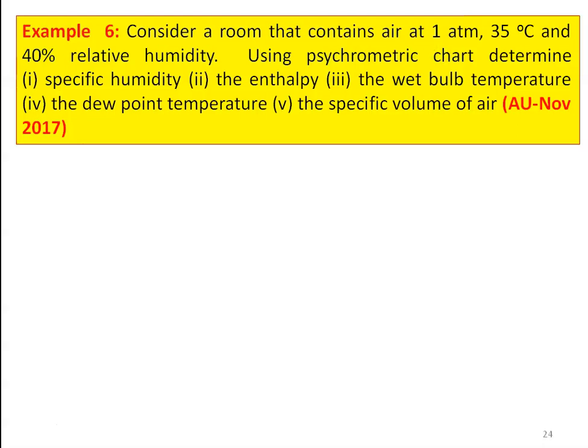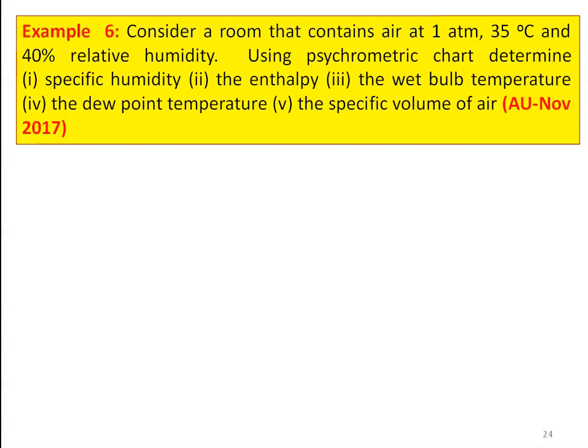This is example number 6 from the university question paper, November 2017. Consider a room that contains air at one atmosphere, 35 degree Celsius and 40 percent relative humidity. Using the psychrometric chart, determine specific humidity, enthalpy, wet bulb temperature, dew point temperature and specific volume of the air. This is the answer to the problem using the psychrometric chart.